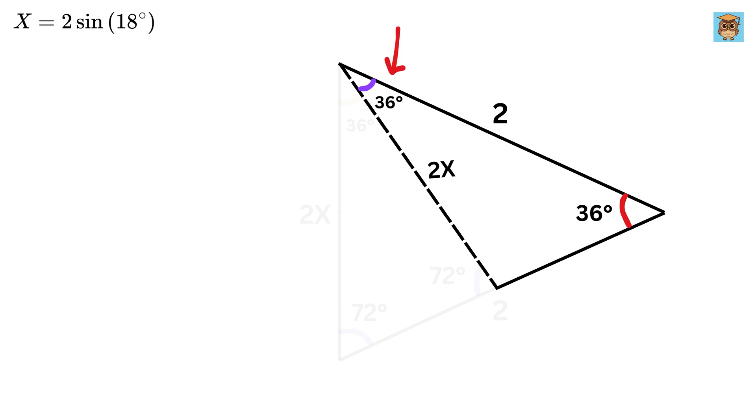Oh look, this angle is also 36 degrees, which means this triangle is also an isosceles triangle. Therefore, both these sides will also be of equal length.